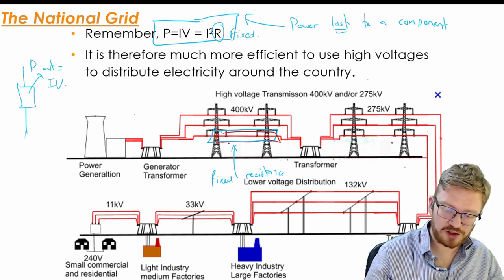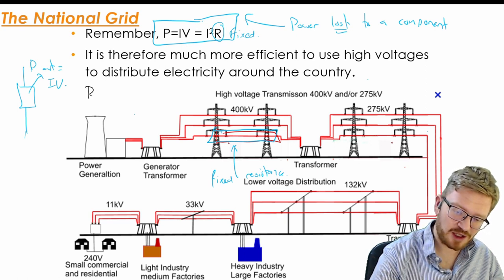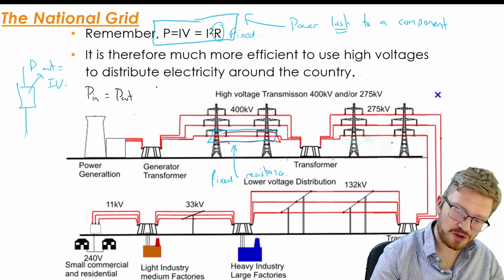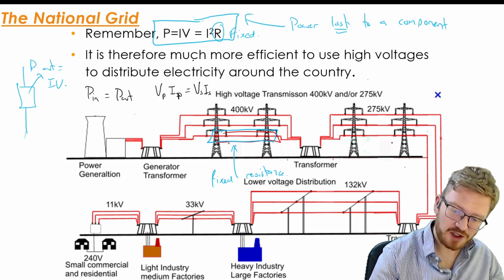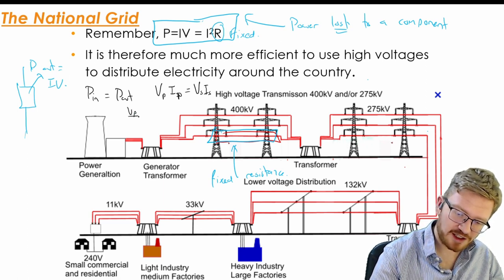What we know is that if the power in to a transformer is equal to the power out, so I also know that voltage on the primary times current in the primary is equal to voltage in the secondary times current in the secondary. So I can rearrange that and I get VP over VS is equal to IS over IP.